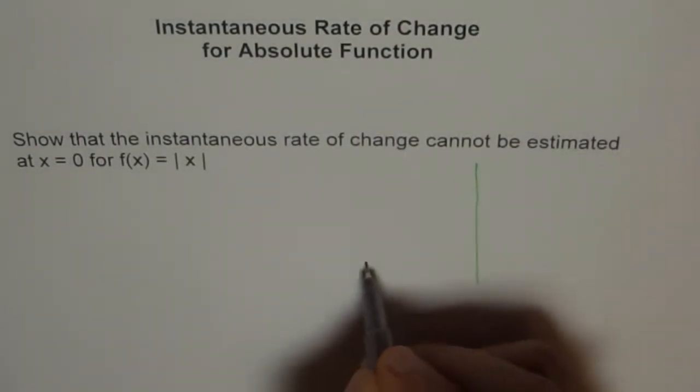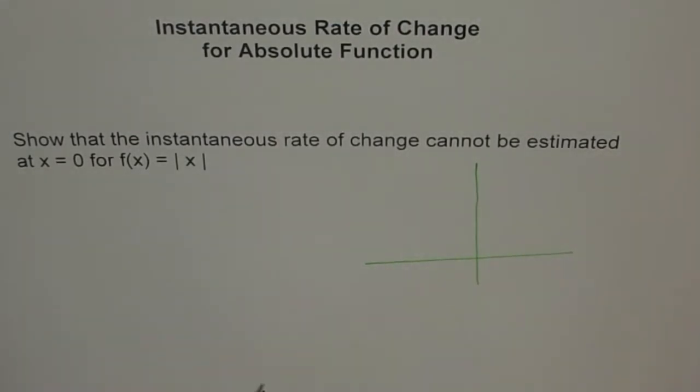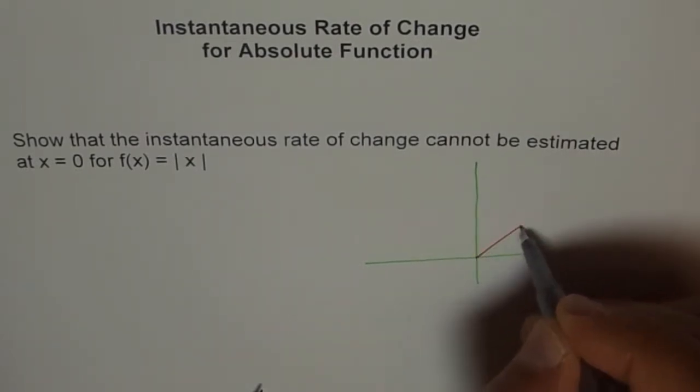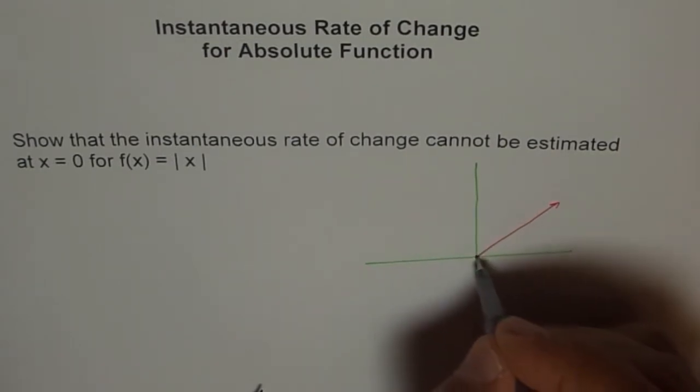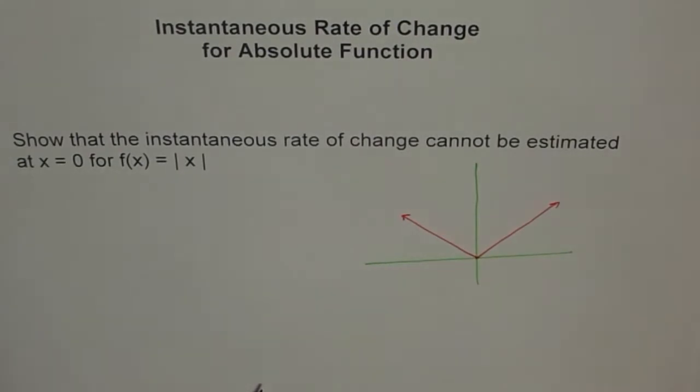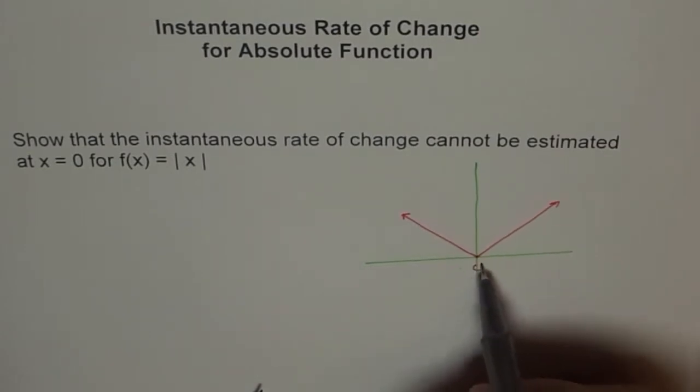So, it is a continuous function. Sometimes the functions are not continuous and therefore we may not be in a position to find instantaneous rate of change at that point. But this is kind of a unique function where the function is continuous but still we are not able to find the instantaneous rate of change at 0. This is our 0. Why is it so?